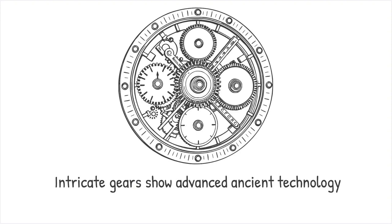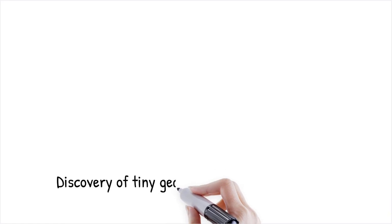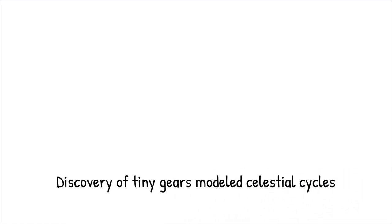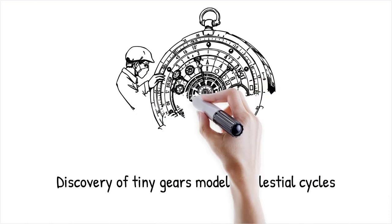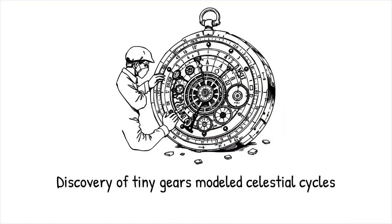When researchers first examined the corroded remains of the mechanism, they discovered tiny gears and dials that indicated it was used to model celestial cycles. It's like finding an old, complex pocket watch in a thrift store. The delicate, precise machinery reveals secrets about the craftsmanship of an earlier era.